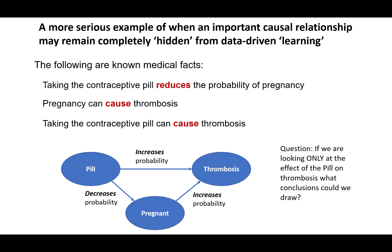Whereas in previous examples we looked at a confounding variable that introduces a spurious relationship wrongly assumed to be causal, the danger here is the exact opposite. We might conclude from data alone that there is no relationship between taking the pill and thrombosis, because of the confounding effect of pregnancy and the possibility that the pill's positive effect on thrombosis is cancelled out by its negative effect on pregnancy.